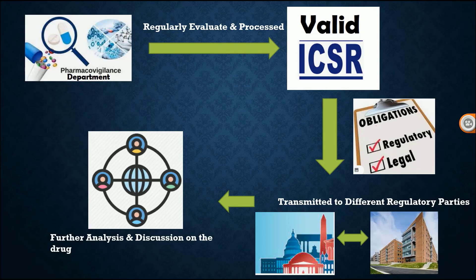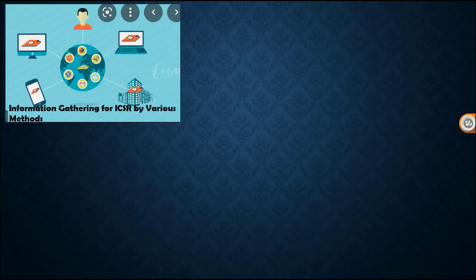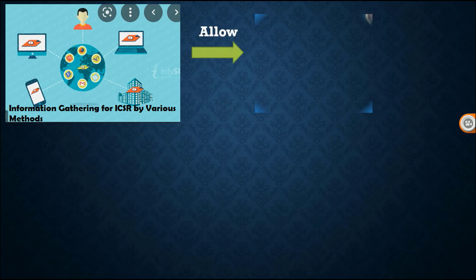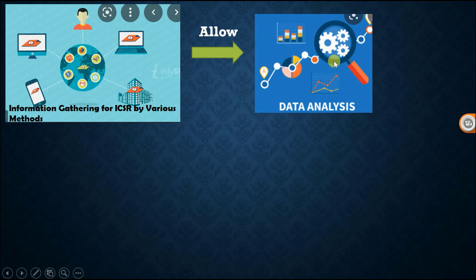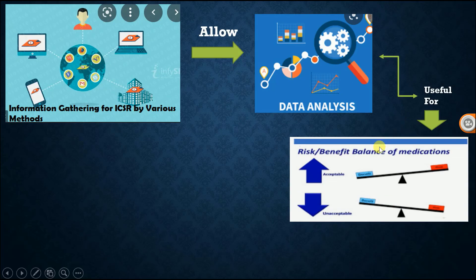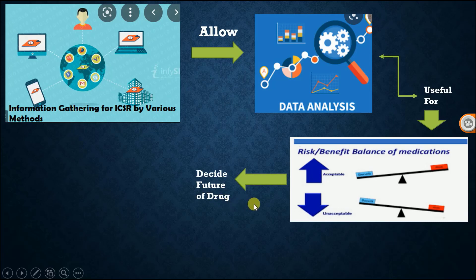The authorities finalize what to do further about the drug. Information gathered for ICSR comes by various methods — electronic mode, paper mode — and various agencies gather the information. After gathering and proper analysis, the data allows analysis of all ICSR reports. This data is useful for the risk-benefit balance of the medication. If there is more benefit than risk, the drug is acceptable; if there is more risk than benefit, the drug will not be accepted for further use.